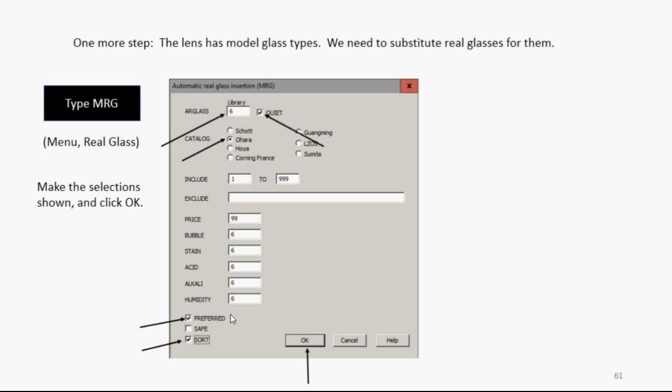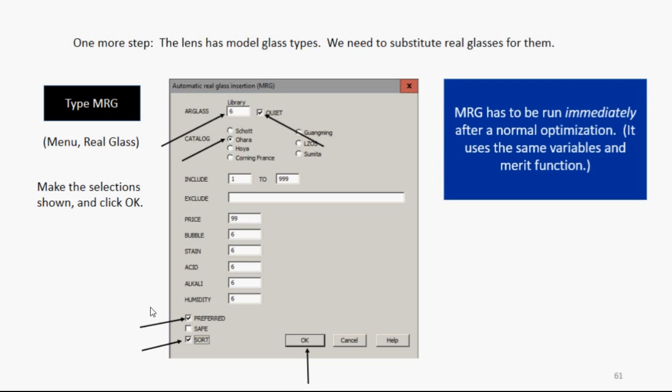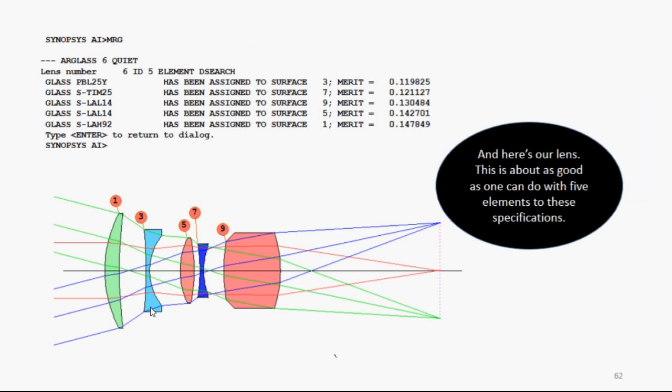We're not quite done. We're going to do one more step. The lens has model glass types. So we want to run the menu real glass type MRG. It opens a dialog. You select, say, the O'Hara catalog, preferred glasses. Click OK. And, oh yes, MRG has to be run immediately after a normal optimization, because it uses the same variables and the same merit function. So we run this, and MRG comes back and says, I've replaced the glass elements with these glasses from the O'Hara catalog. Now, this is about as good as we're probably going to do with five elements with these specifications.